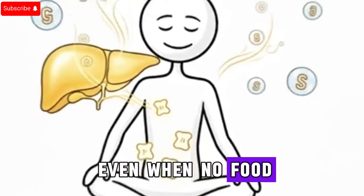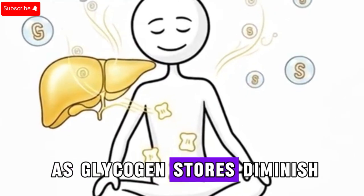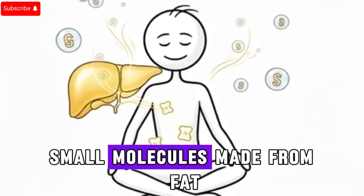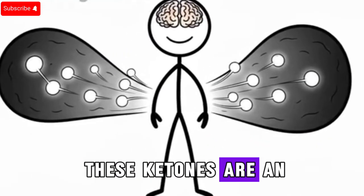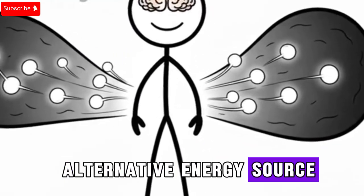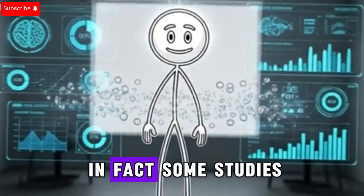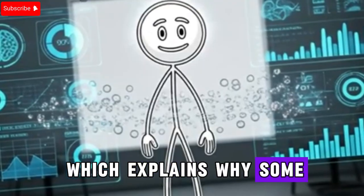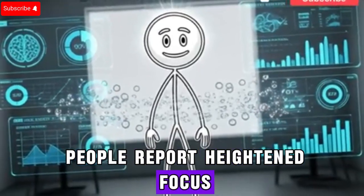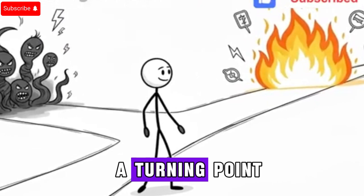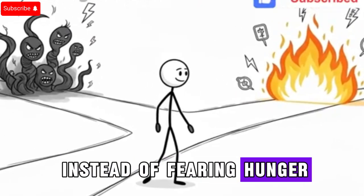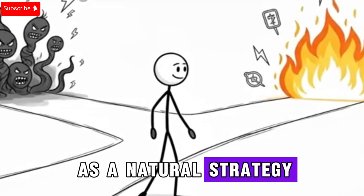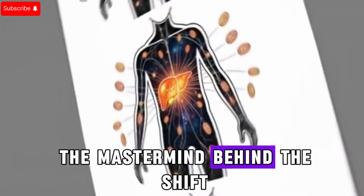As glycogen stores diminish, the liver begins producing ketone bodies, small molecules made from fat. These ketones are an alternative energy source, and your brain loves them. In fact, some studies suggest that ketones can sharpen mental clarity, which explains why some people report heightened focus during fasting. This marks a turning point. Instead of fearing hunger, your body starts embracing fat burning as a natural strategy, and your liver is the mastermind behind the shift.